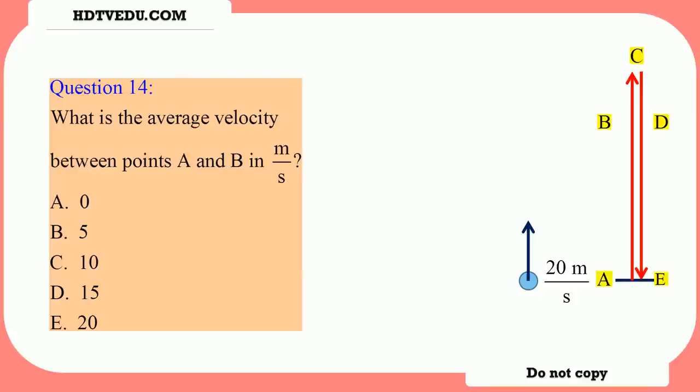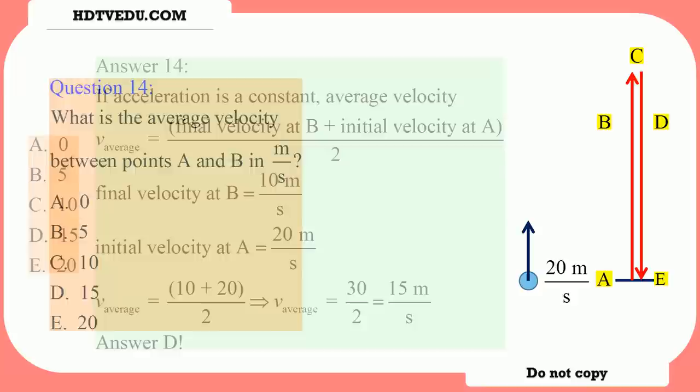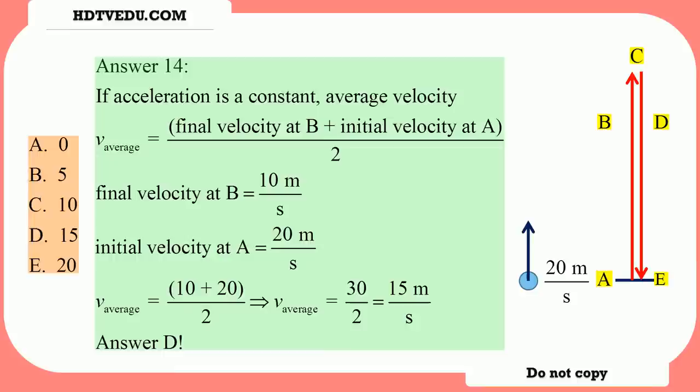Velocity at point A is positive 20. Velocity at point B is positive 10. These are velocities, so you have to take directions into account. Positive 20 plus positive 10 is 30. Average velocity is 20 plus 10 divided by 2 — that is, final velocity at B plus initial velocity at A divided by 2. So the answer is D: 15.